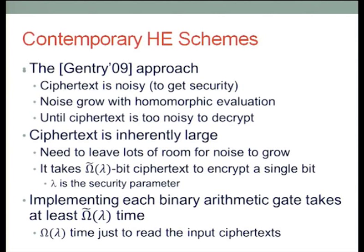The consequence of that, as was very clear in John Sebastian's presentation, is you have very big ciphertexts. Ciphertext size has to be large enough so that you have room for all of this noise to grow in it. In particular, you cannot get below something which is quasi-linear in your security parameter. The practical numbers, as John Sebastian said, is that the ciphertext size is something like a few million bits, and it encrypts a single bit.